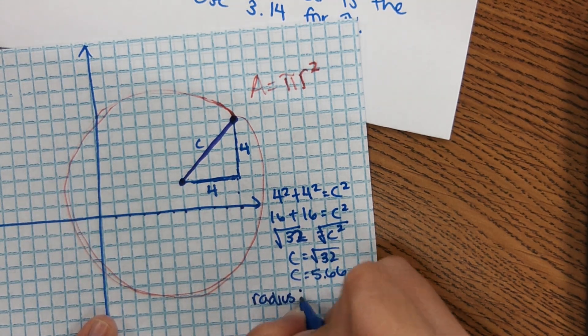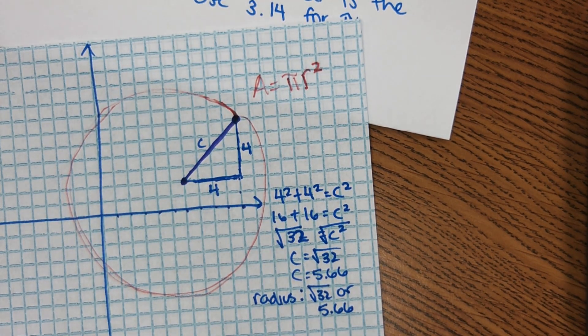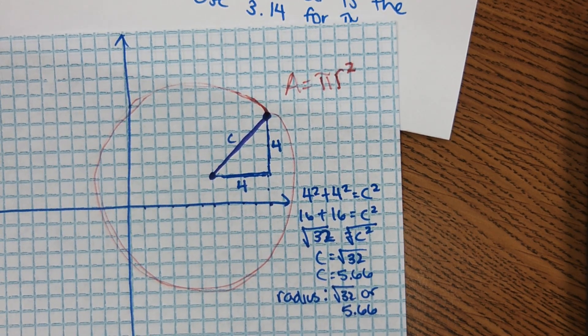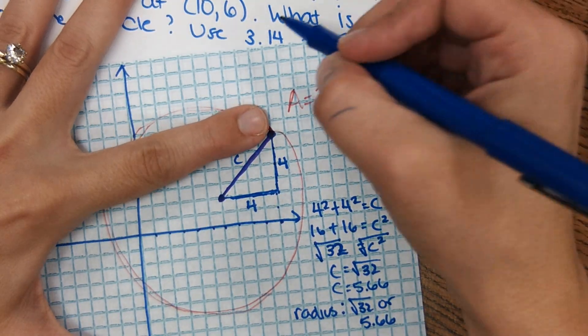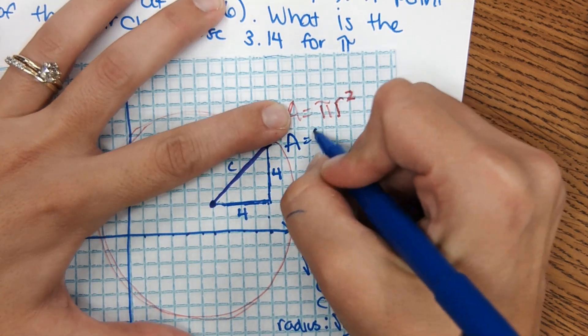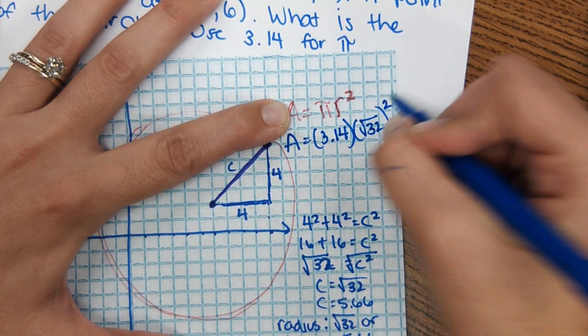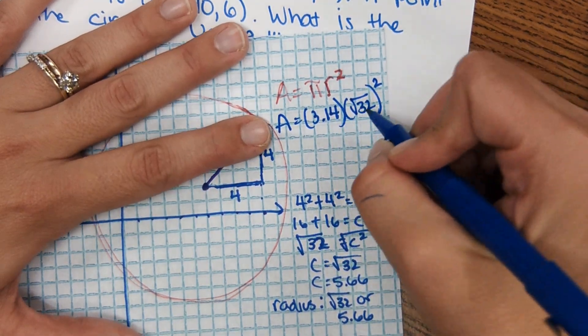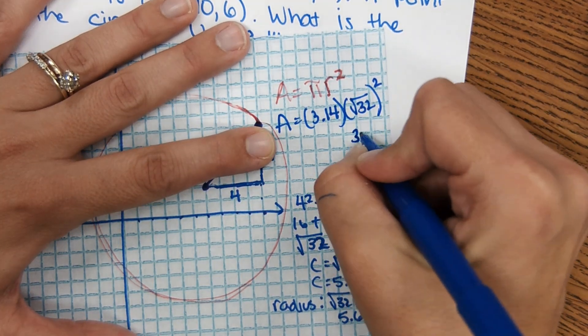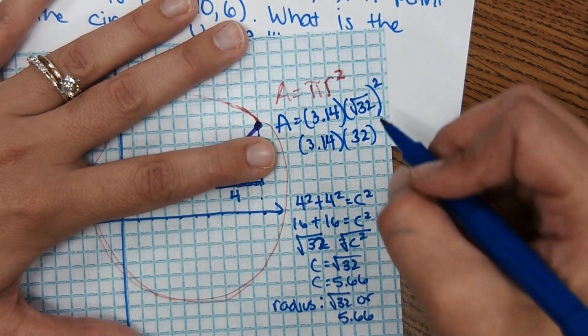So the radius of this circle is square root of 32, or 5.66. I put or, you'll see why in a second. So now that we have our radius, we can plug it into the equation for area. In the problem, it said, use 3.14 for pi. So our area equation, I'm going to write it out, 3.14. And then the radius, we're actually going to use that square root of 32, and I'll show you why. So we set this up here, square root of 32 squared is just going to be 32. So it allows me to just kind of do that part in my head, and it's a more accurate answer because there's no rounding of decimals.